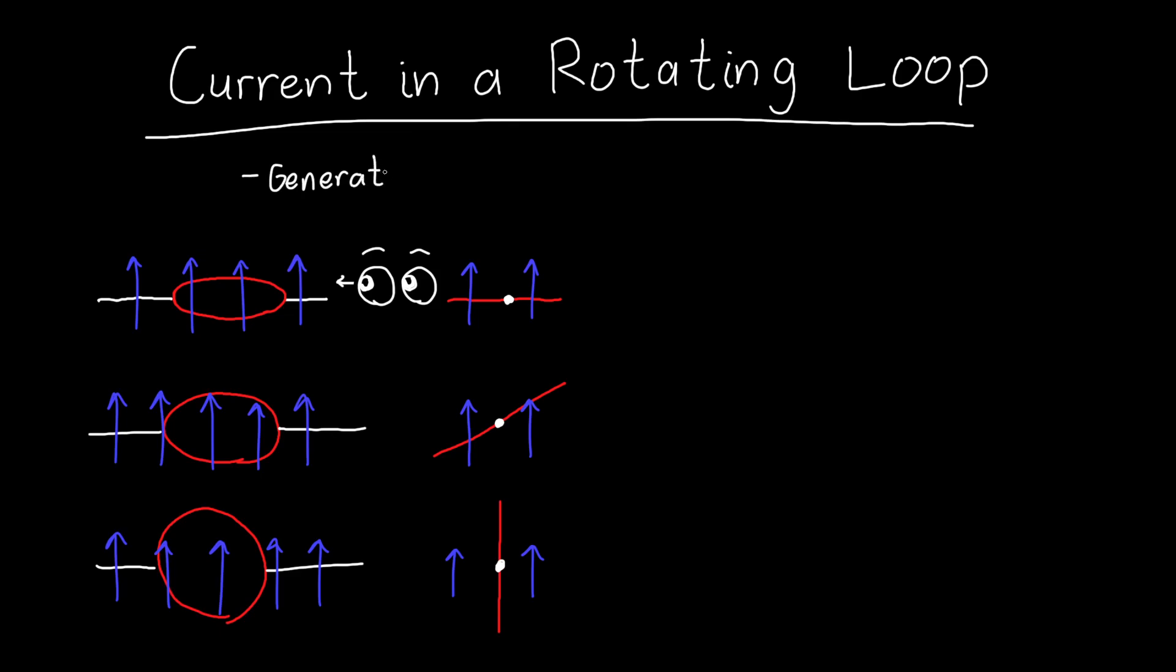This is how almost all modern methods of generating electricity work. It's basically by rotating a loop or a solenoid, a bunch of loops, in an external magnetic field.